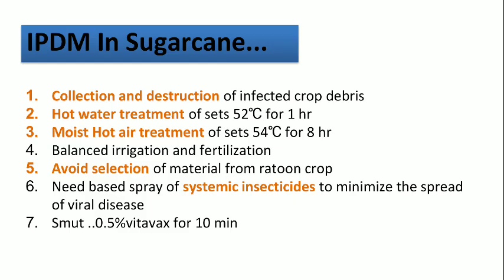For IPDM in sugarcane, the cultural practice is to collect and destroy infected crop debris by burning. Since most diseases are seed-borne, go for sett treatment. The first is physical treatment — hot water treatment of setts at 52°C for one hour. The next is moist hot air treatment where setts are exposed to moist hot air at 54°C for about eight hours. Balanced irrigation and fertilization also play a very important role. In case of ratooning, avoid selection of planting material from ratoon crops.